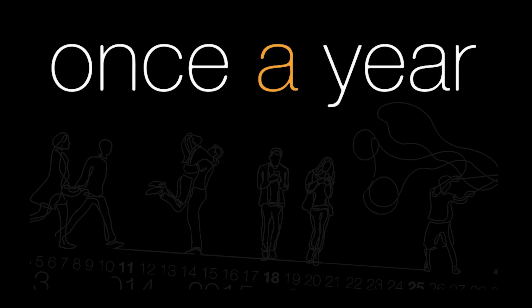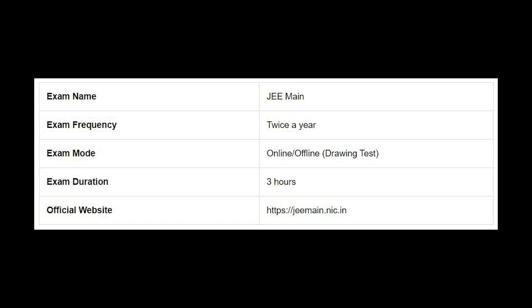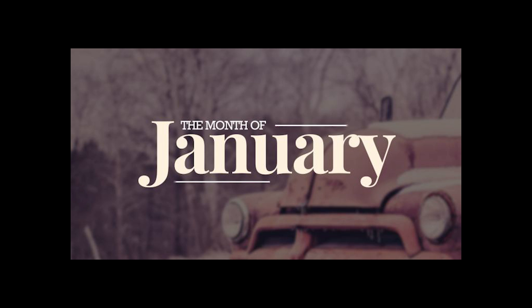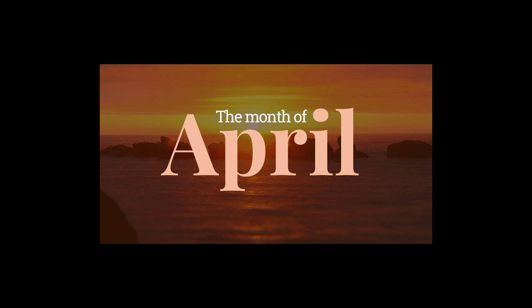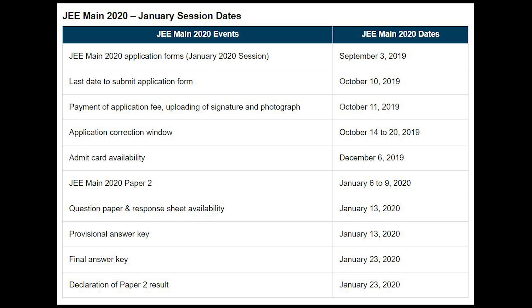Back in 2017 there was only one session conducted once a year, but in 2020 JEE Main Paper 2 has two sessions — first in January and the second in April, though the April session was shifted to July due to COVID. For the January session, the application form was out in the starting week of September, the last date to submit was the first week of October, and the admit card was available in December.